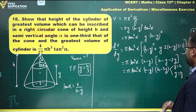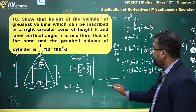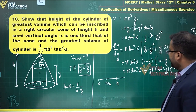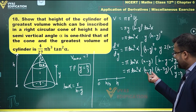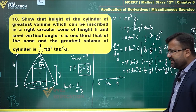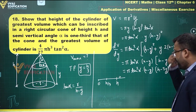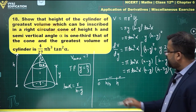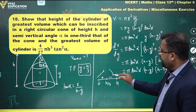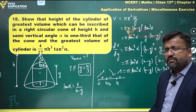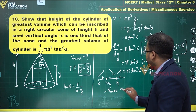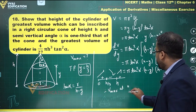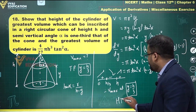Analyzing the critical points: y ranges from 0 to h, with critical point at y = h/3. Before h/3, both (h - y) and (h - 3y) are positive, so dV/dy is positive. Between h/3 and h, (h - 3y) is negative, so dV/dy is negative. The function increases then decreases, confirming a maximum at y = h/3. Hence proved.